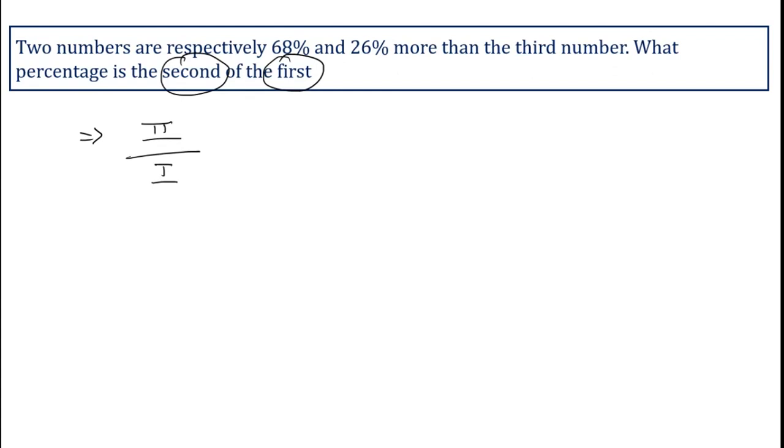The two numbers are respectively 68% and 26%, that is x% equals 68% and y% equals 26%. The third number, we always consider it as equal to 100.